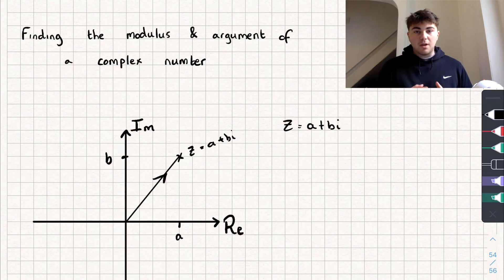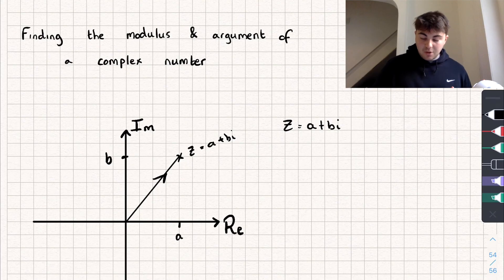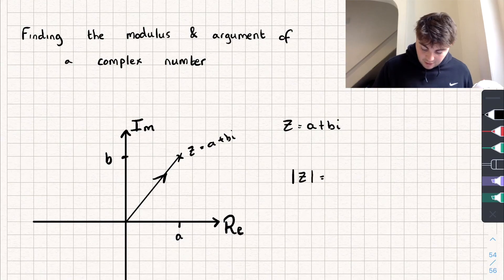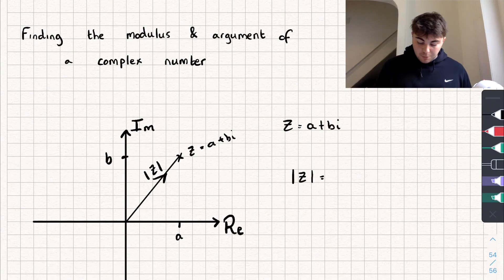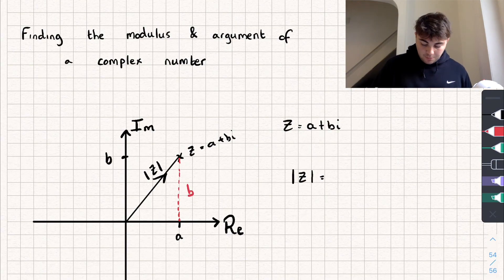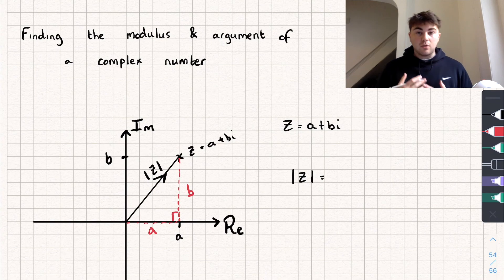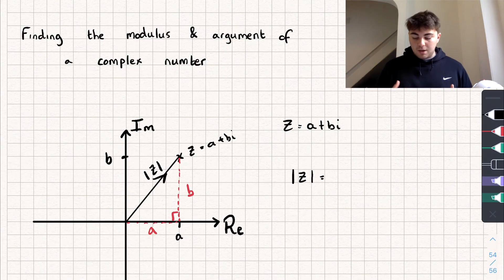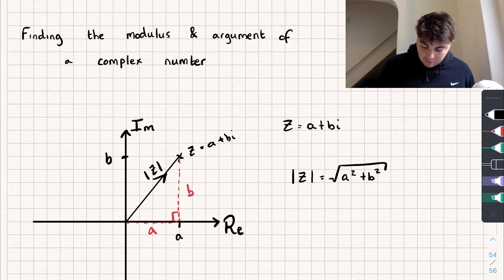The modulus of the complex number is just its size, and that is just the same as the length of this vector here. We represent that with the modulus bars: the modulus of z is written like this and is equal to the length of that vector. We could find that using Pythagoras — if we draw a line down, the distance of that line is going to be b, and the distance from the origin to the point a is just a. This creates a right angle triangle, and so we can find the modulus of z by taking the square root of a squared plus b squared.